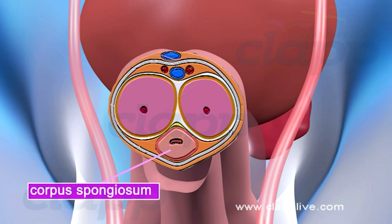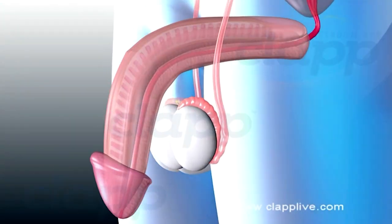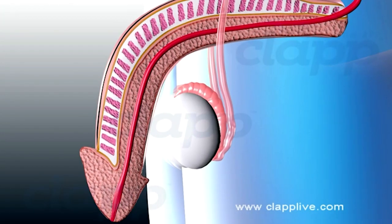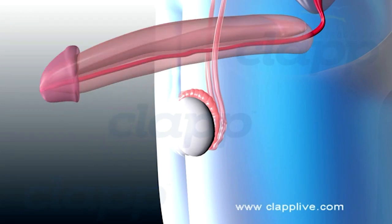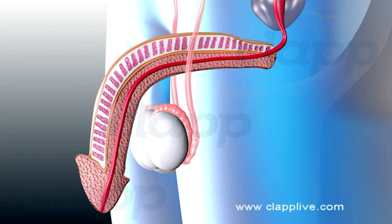The third cord, corpus spongiosum, encloses the urethra. These tissues are rich in blood sinuses but are normally not filled with blood. During sexual excitement, arterial blood rushes to these tissues and causes erection of the penis.